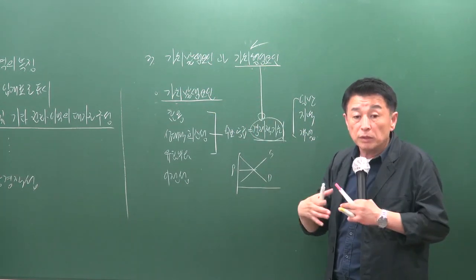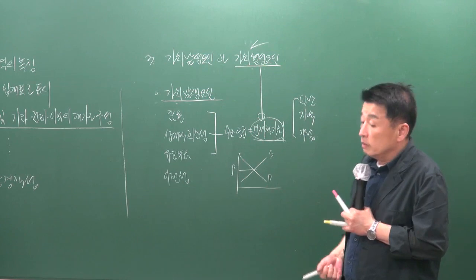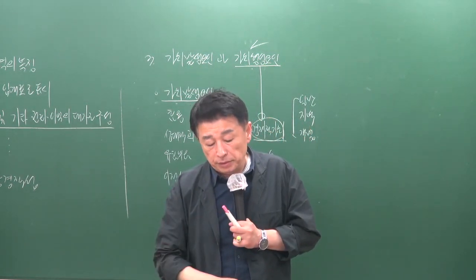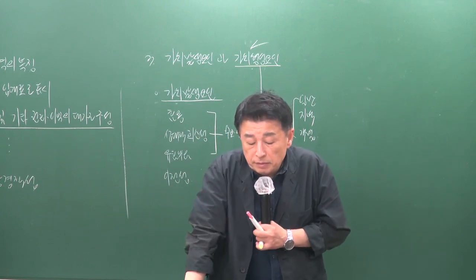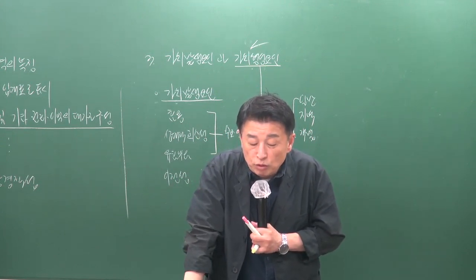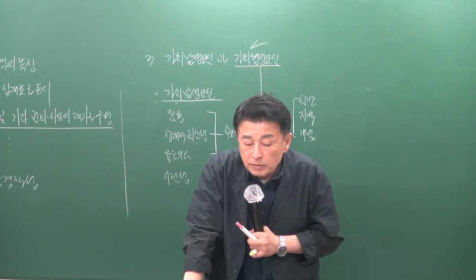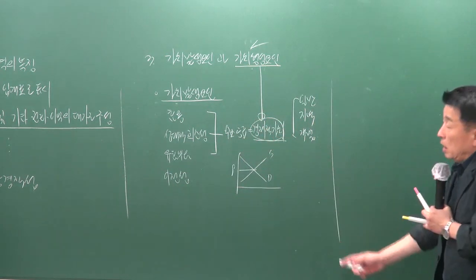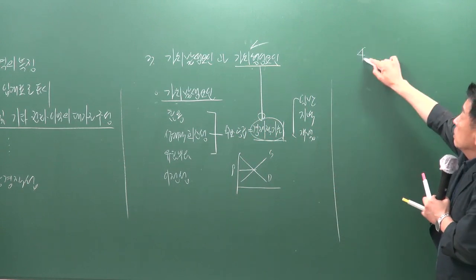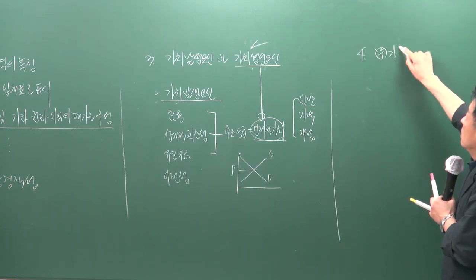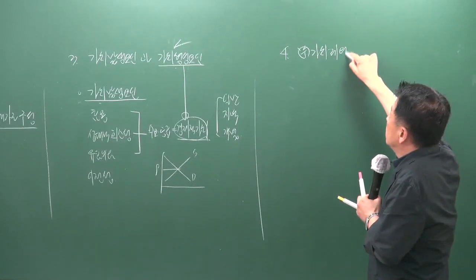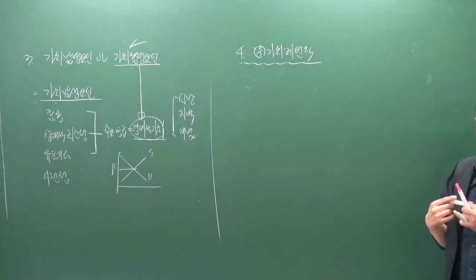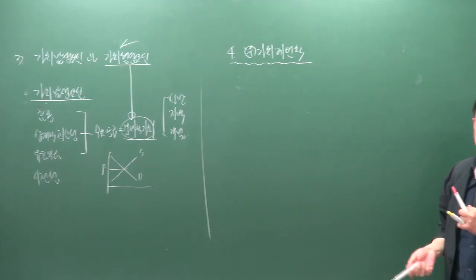가치형성요인은 감정평가 규칙상 용어에 있으므로 이를 답으로 제시한 것입니다. 올바른 것을 고르라는 문제에서 이 점을 활용해 구별할 수 있어야 합니다. 다음으로 부동산 가치재원칙이 있으며, 이 원칙들의 총 개수도 알아두셔야 합니다.